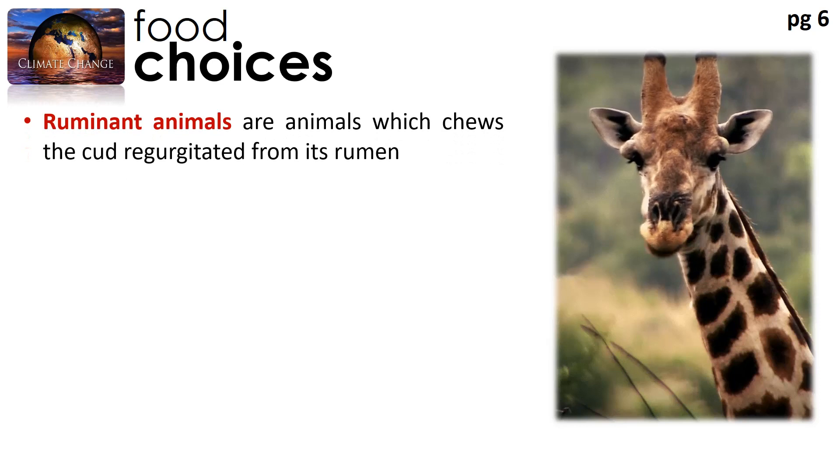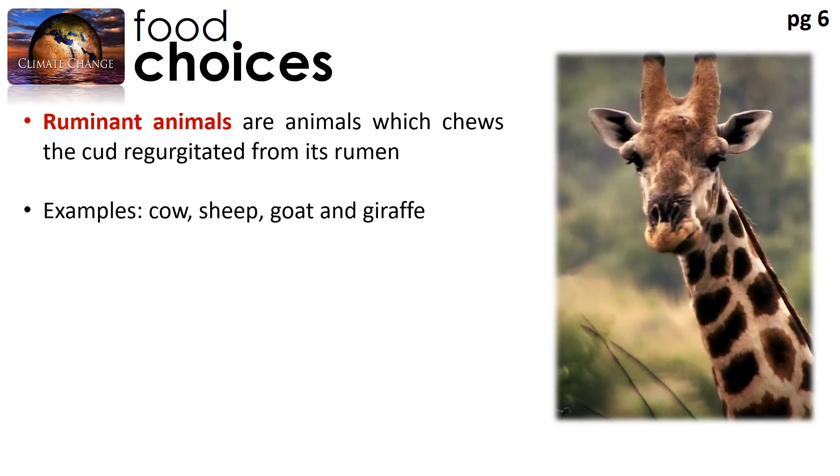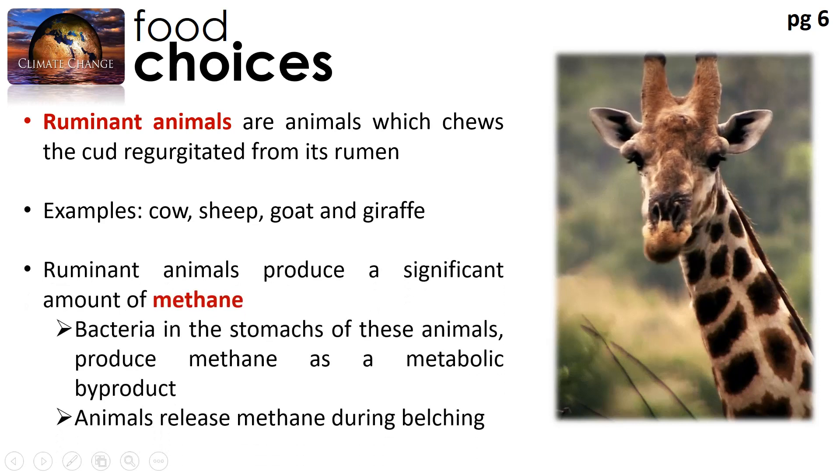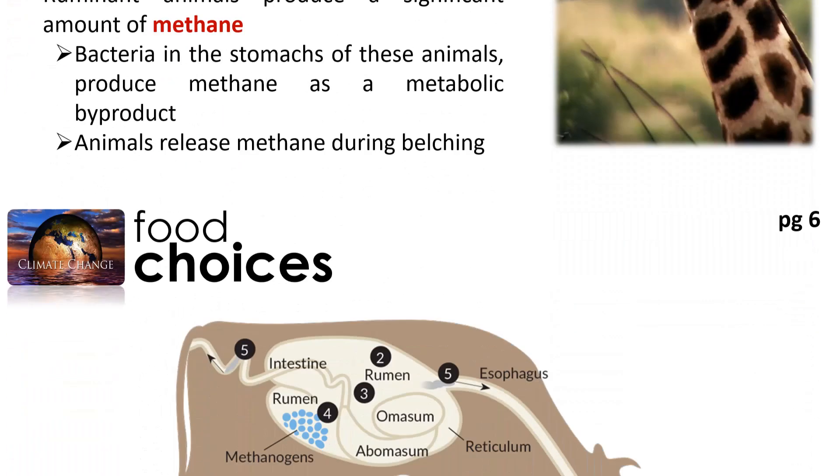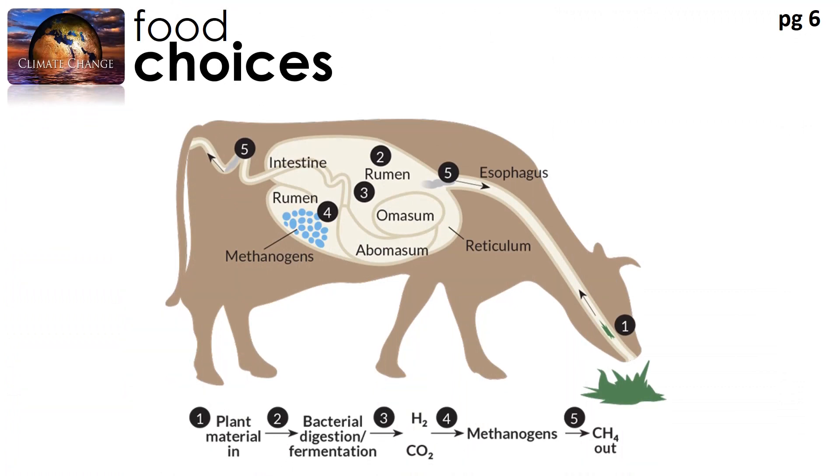It's because cows and cattle are ruminant animals. Now what are ruminant animals? They are animals which chew the curd regurgitated from their rumen. I will explain a bit about that later. Examples of these animals will be the cow, sheep, goat, and our friend here, the giraffe. Now ruminant animals produce a significant amount of methane. This is because they have bacteria in their stomachs which produce methane as a metabolic byproduct. And these animals release their methane through belching. Yes, I'm sure some of you have heard or have seen cartoons showing cows farting out the methane and then fire can be set to the methane gas. Now actually there's some truth to that. But actually the real truth is that cows belch out 95% of their methane and they fart out only about 5% of their methane.